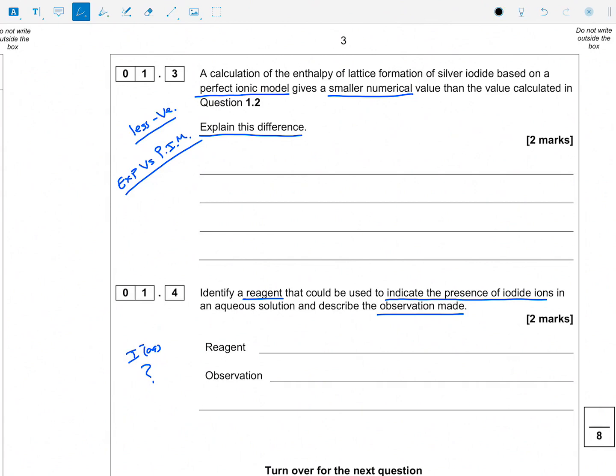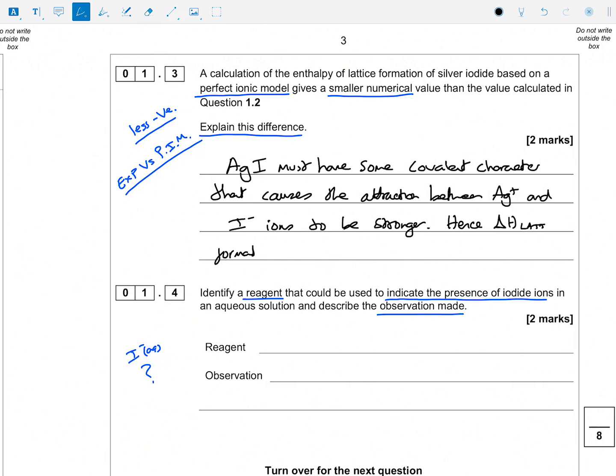So what that means is that AgI must have some covalent character. So I'm going to say that AgI, some covalent character, that causes the attraction between Ag+ ions and I- ions to be stronger. Hence, delta H lattice formation, let's say,